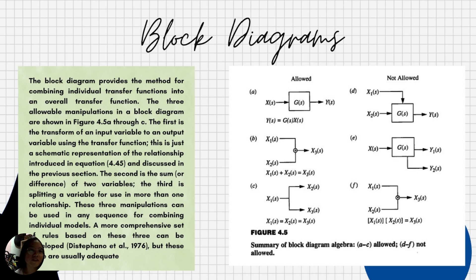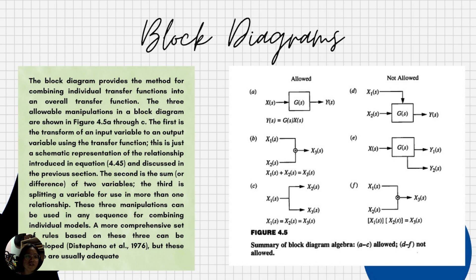The block diagram provides a method for combining individual transfer functions into an overall transfer function. The three allowable manipulations shown in figure 4.5 are: first, transforming an input variable to an output variable using a transfer function; second, the sum or difference of two variables; and third, splitting a variable for use in more than one relationship. Figure 4.5 summarizes block diagram algebra, showing manipulations A through C as allowed and B through F as not allowed.